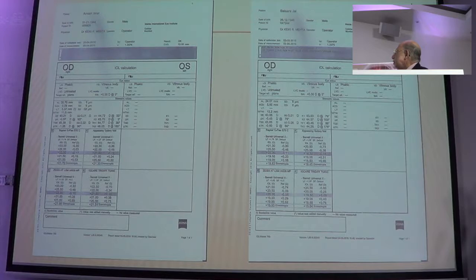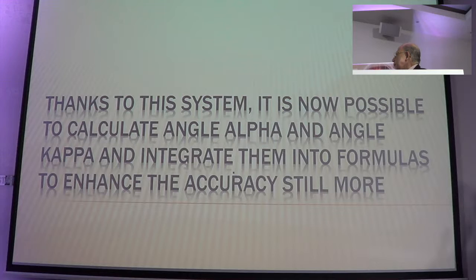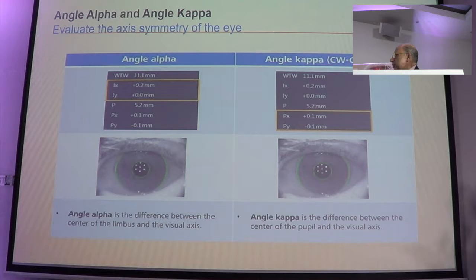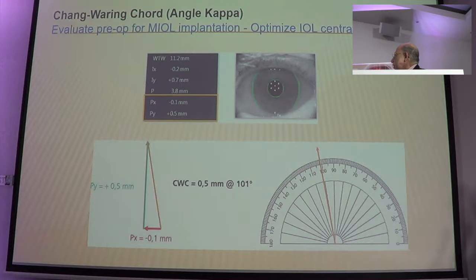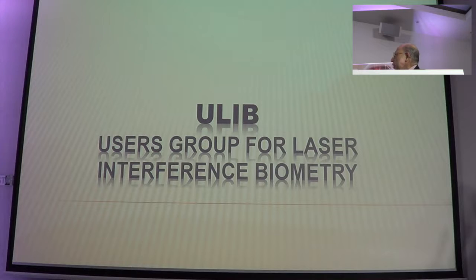This is what gives you that fine edge in calculating. One of the big advantages in utilizing total corneal keratometry is that you can calculate angle alpha. Angle alpha is the distance difference between the center of the pupil and the visual axis. By calculating that, you get a much more accurate index utilizing the formula — the other component being the port, channel wide port, and the alpha evaluation of systems. All of these you can have applied.